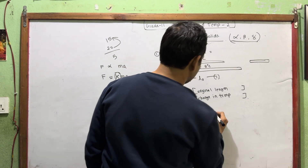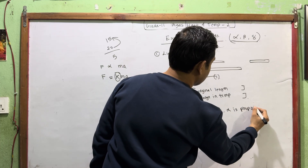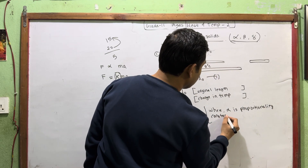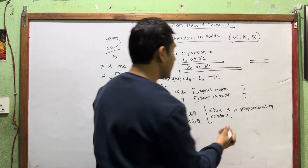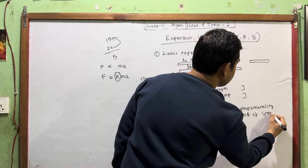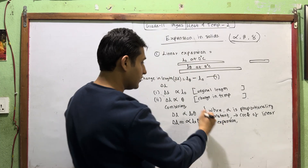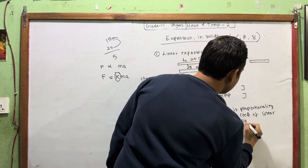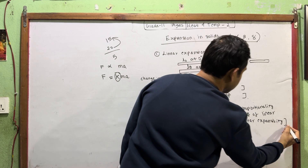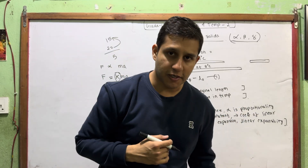So where alpha is the proportionality constant. The proportionality constant is called the coefficient of linear expansion, also known as the coefficient of linear expansivity.